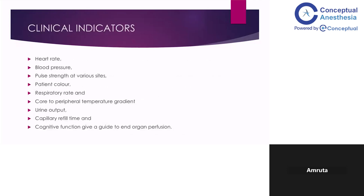What are the clinical indicators? When we say monitoring, we also need to know how to monitor clinically. These include: heart rate — absence of tachycardia; blood pressure maintained within normal range; pulse strength at various sites — peripheral and central pulses; patient color — whether you have a pale versus warm, non-flushed patient; respiratory rate — if the patient is too tachypneic; cold peripheries. All these are indicators of low cardiac output and hence poor organ perfusion. Low urine output also indicates poor organ perfusion, as does prolonged capillary refill time.